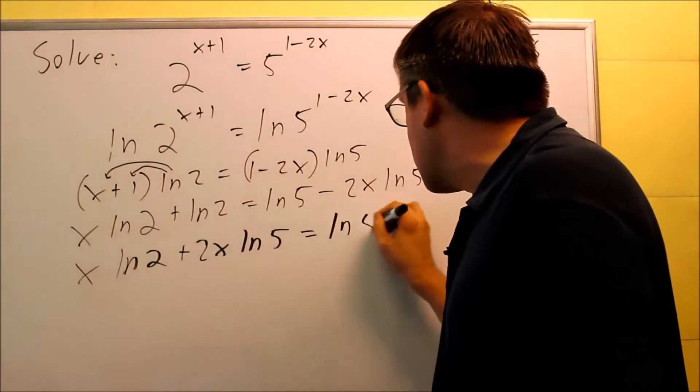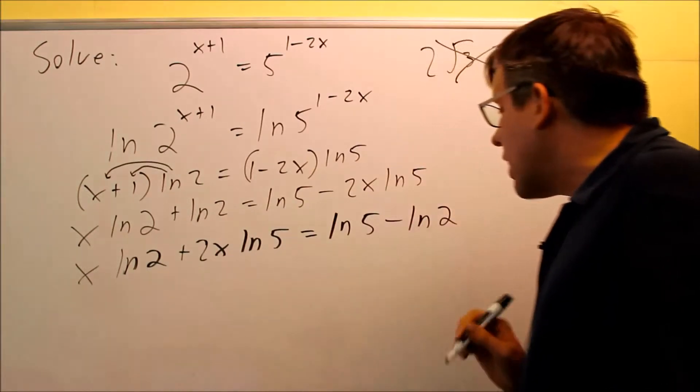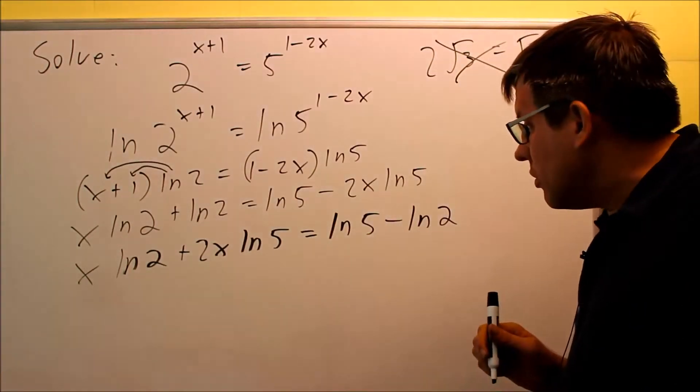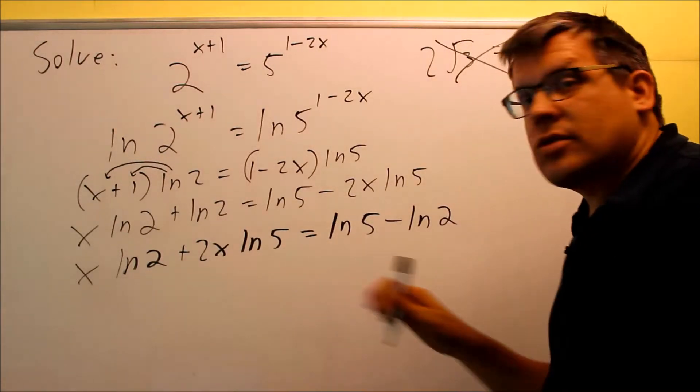The ln 2, I'm going to bring that across the equal sign and it's going to become negative. So now I have ln 5 minus ln 2. Now I have all the x's on one side of the equation.